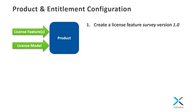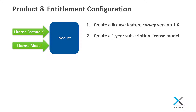By default, the capability request example is looking for a license feature called 'survey' version 1.0, so we'll start by creating this license feature. A product can have many license features; however, we'll limit it to one in this simple use case. Next, we'll create a license model for use with our product. There are many different types of license models such as trial, permanent, subscription, and usage-based. We'll create a one-year subscription model to start.